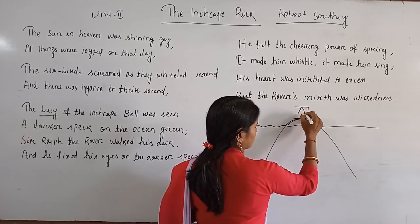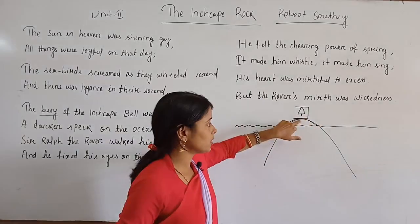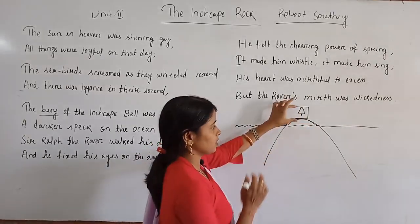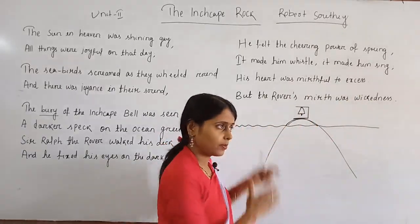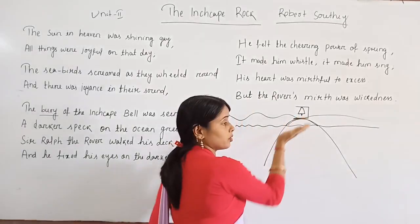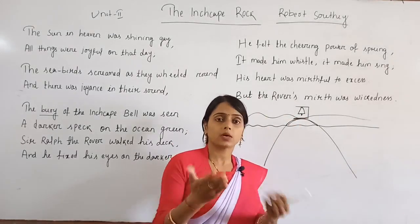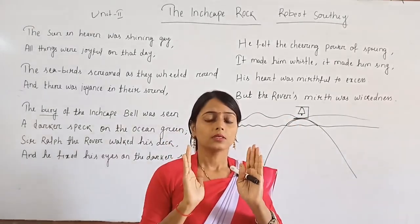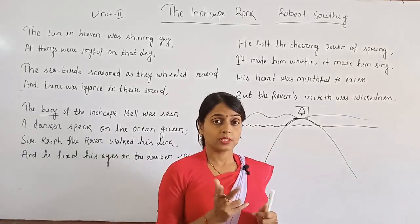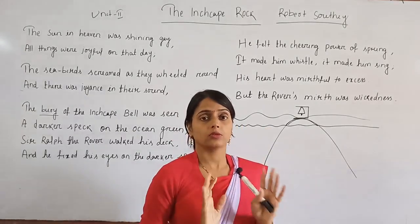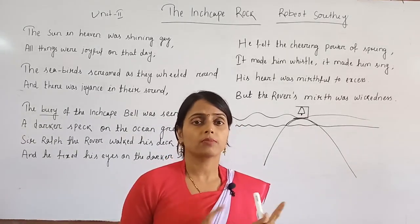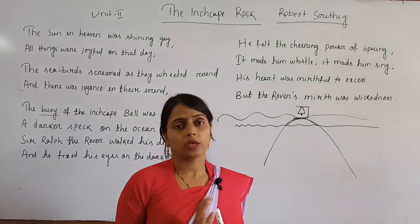To avoid this, the Abbot placed a bell on a floating object tied to the rock. Whenever there were high tides or rough seas, the float would move and the bell would ring. By hearing the sound of the bell, the mariners could identify the rock and change the direction of their ship, saving their own lives and those of others. That is why people were blessing the Abbot for his noble deed.